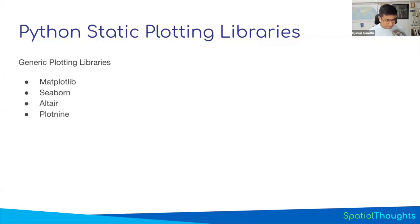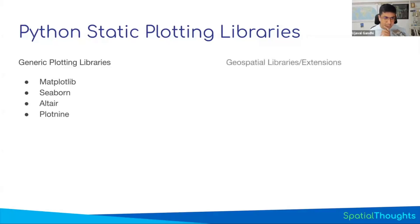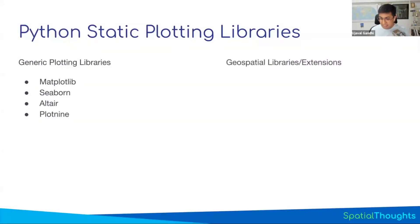Altair and Plotnine are other libraries. Plotnine is based on the ggplot library in R, so if you're coming from R and you like that charting interface, Plotnine provides a similar interface in Python. These are generic libraries, and some of them can do geospatial stuff like maps, but there are geospatial mapping libraries built on top of these that are specifically designed for spatial work like working with projections.